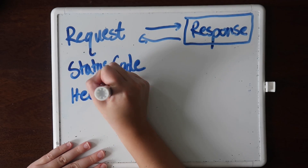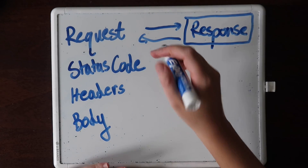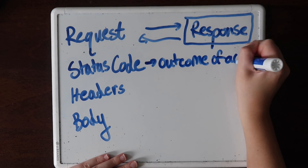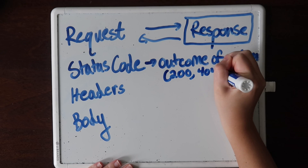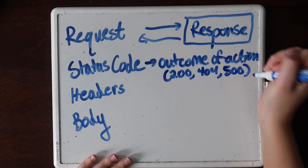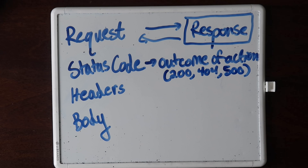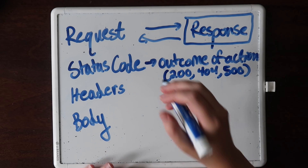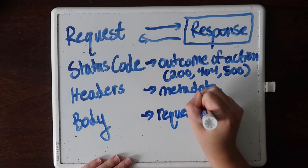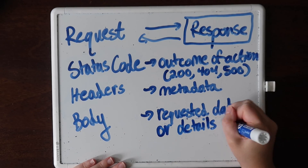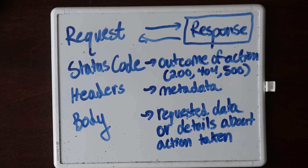On the server side, when a request is received, it's processed and a response is generated. The response typically includes a status code, headers, and an optional response body. The status code indicates the outcome of the request — whether it was successful or encountered an error. Some common status codes include 200 OK for successful requests, 404 Not Found for resources that couldn't be found, and 500 Internal Server Error for unexpected server errors. The response headers provide metadata about the response, similar to how headers are used in requests. Finally, the response body contains the data returned by the server.